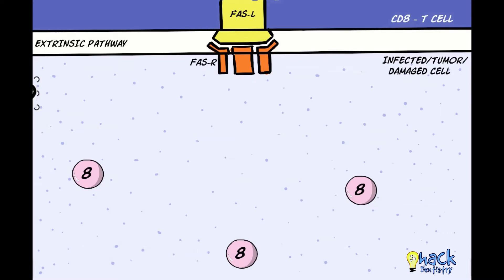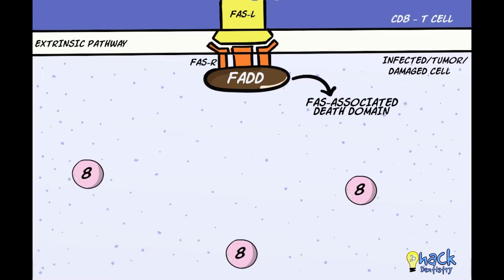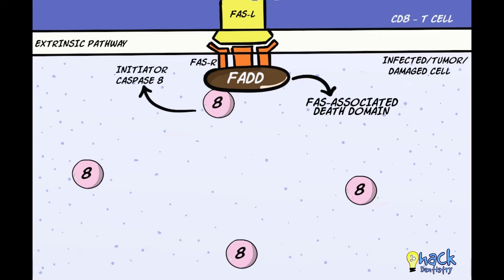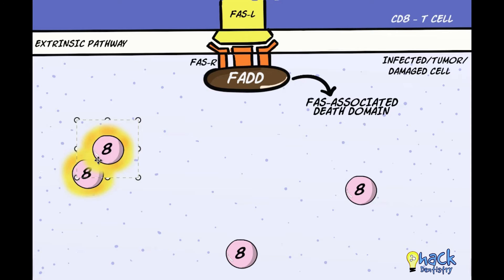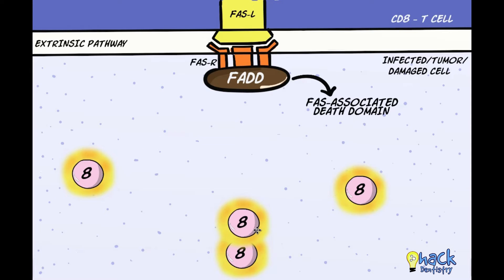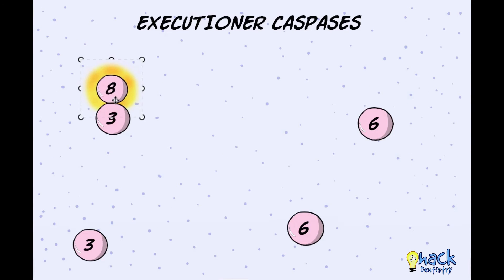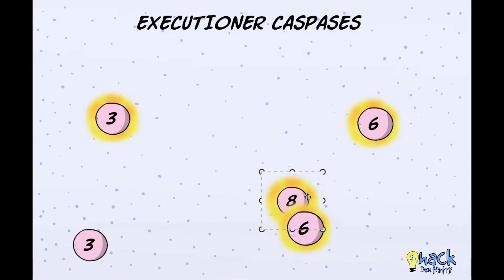The extrinsic pathway involves binding of an adaptor protein called FAS-associated death domain to the cytoplasmic end of at least 3 to 4 FAS ligands. This then binds with caspase-8, an initiator caspase, which gets cleaved to become active. The active caspase-8 further activates other caspase-8 molecules and these in turn activate executioner caspases 3 and 6, leading to apoptosis of the cell.